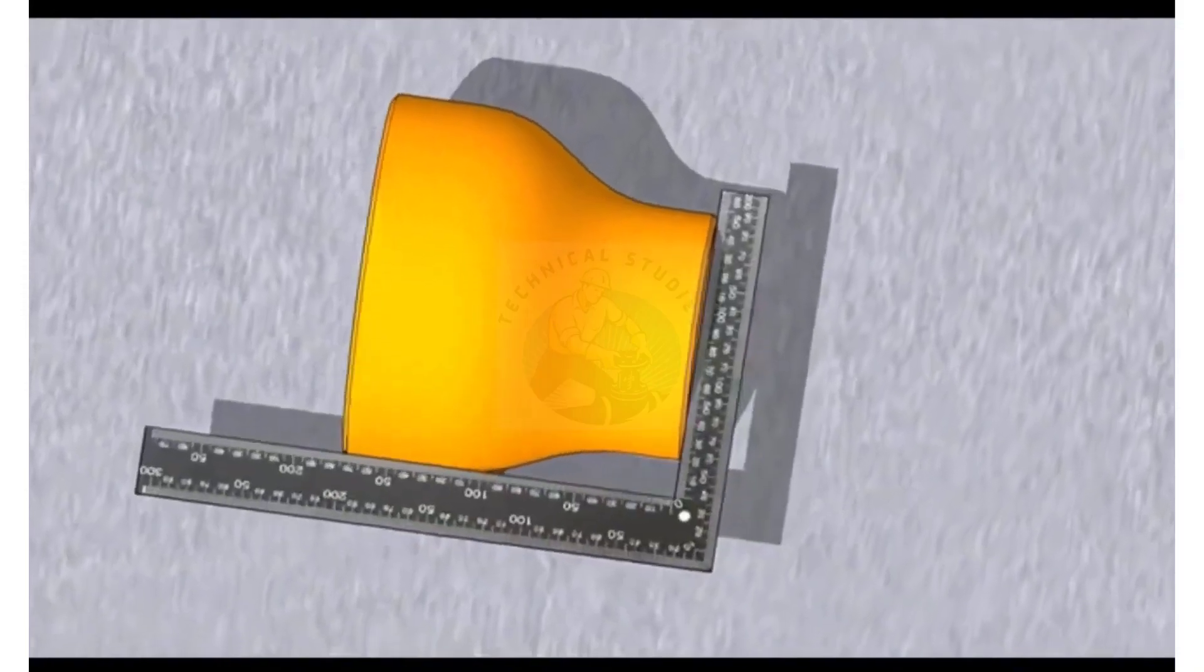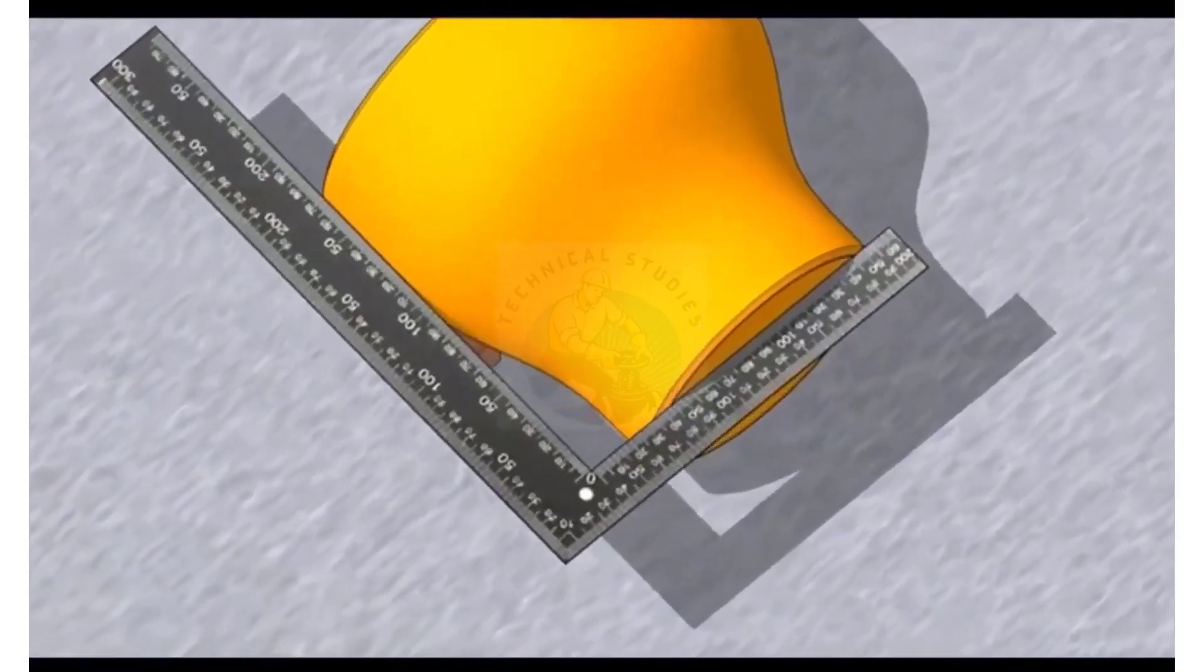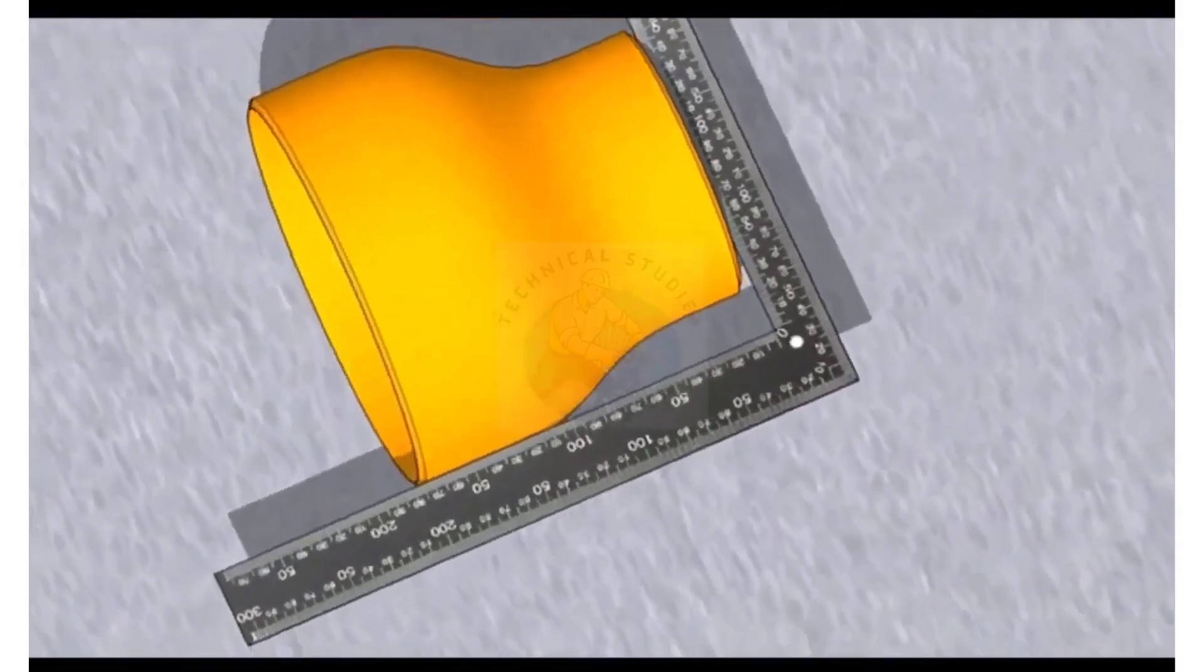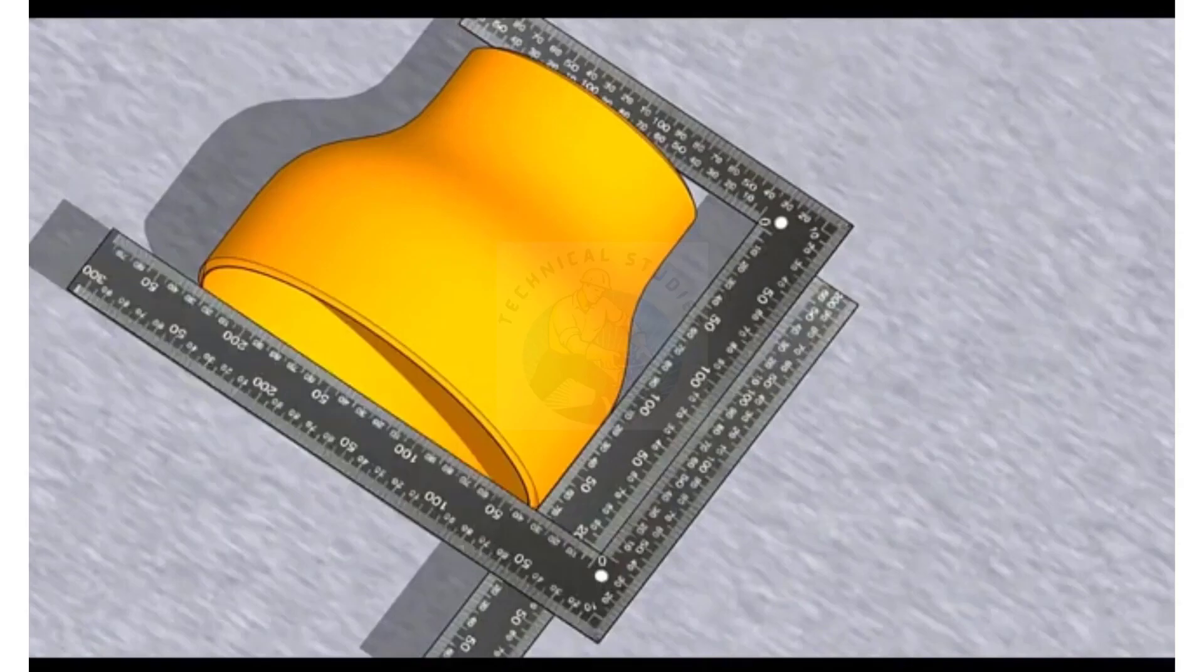Hold a right angle on any side of the reducer, touching both ends properly. Now hold another right angle at the other end, as shown.